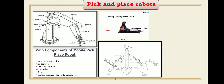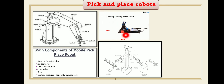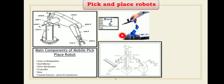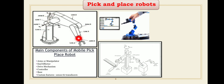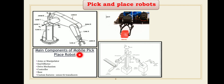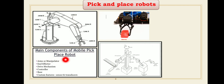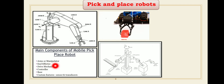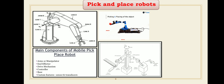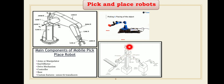This animation shows exactly the pick and place operation — picking an object from one location and placing it at another. The construction detail and main components of the pick and place robot include the manipulator, end effector, drive mechanism, controller, base, sensors, and transducers. This covers the working principle of the pick and place robot.